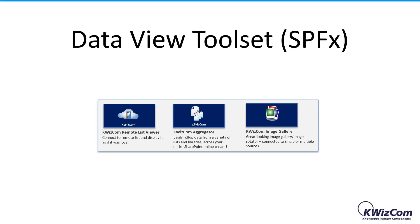I'm going to speak about three apps: the Remote List Viewer, the Quizcom Aggregator, and the Image Gallery. The Remote List Viewer allows you to connect to a single list or library — this list can be local or remote, located on a different site or site collection — and then you can display the data in a super flexible UI. The Quizcom Aggregator connects to a different data source, which is a kind of query you can configure, so it aggregates data from multiple sites and site collections, then uses the same UI mechanism to display the results.